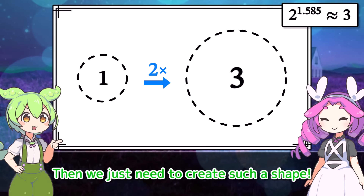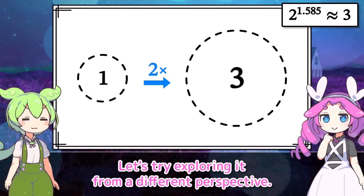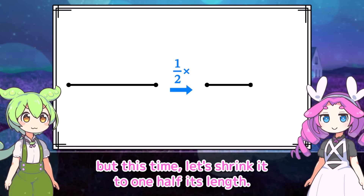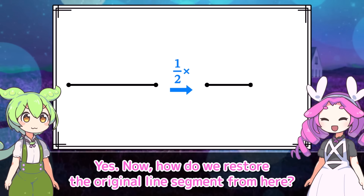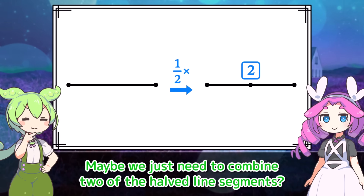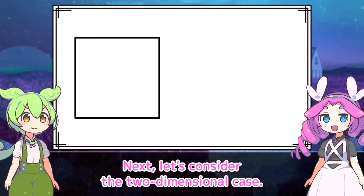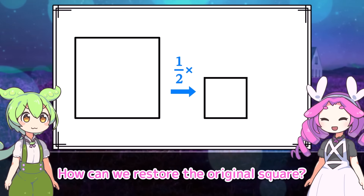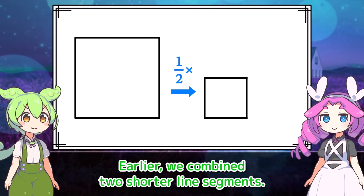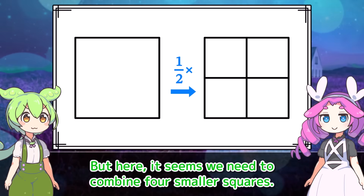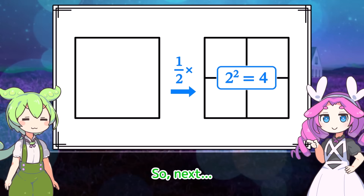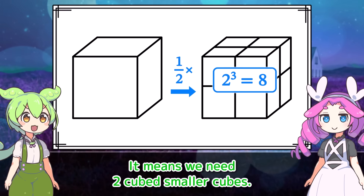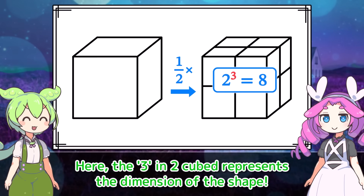Then we just need to create such a shape. Let's try exploring it from a different perspective. Earlier we enlarged the line segment, but this time let's shrink it to one half its length. How do we restore the original line segment? We just need to combine two of the half line segments. Next, let's consider the two-dimensional case. If we shrink a square to half its length, how can we restore the original square? Here it seems we need to combine four smaller squares — two squared. So if we shrink a cube to half its length, we'll need eight — two cubed — smaller cubes to restore the original cube. The exponent represents the dimension of the shape.